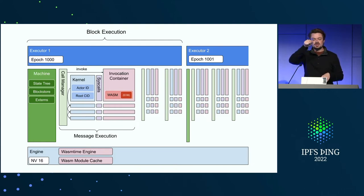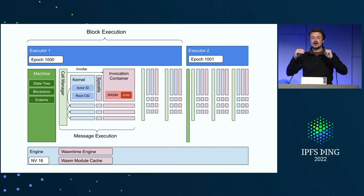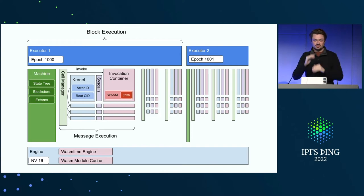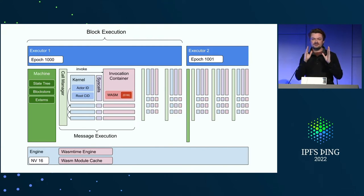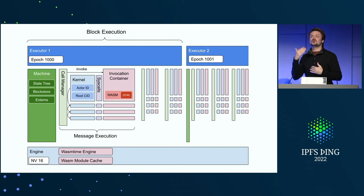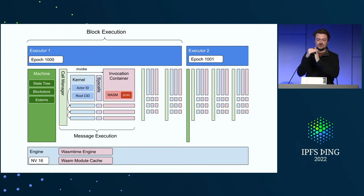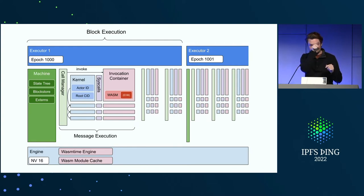The call manager receives a message and sends it to the first actor, which gets run in what we call an invocation container. That executes the WASM actor internally. The actor can then call back out through something we call a syscall — in many systems called a host call — into something we call the kernel. The kernel is the host-side glue for these actors. From the kernel, actors can access their state, check their actor ID, and do all the things they want on the blockchain. They can also call into other actors: from your WASM actor, you call through the syscall into the kernel, say you want to send a message to another actor, and the call manager routes that down, creating the next kernel and loading the next actor.